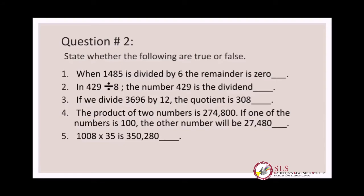Number five: one thousand and eight multiplied by thirty-five is three hundred and fifty thousand two hundred and eighty. For this part we again have to do the rough work to get the correct answer. The answer key is on the next page.